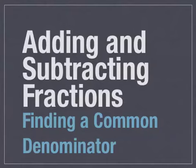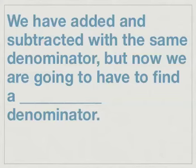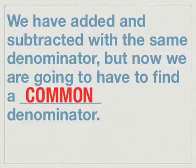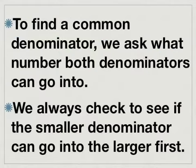Adding and Subtracting Fractions: Finding a Common Denominator. We have added and subtracted with the same denominator, but now we are going to have to find a common denominator. Common denominator means that we need to have the same number on the bottom of both numbers that we're either adding or subtracting. To find a common denominator, we are going to ask what number both denominators can go into. You always want to check to see if the smaller denominator can go into the larger denominator first. That way you're only going to have to change one fraction instead of changing both fractions.